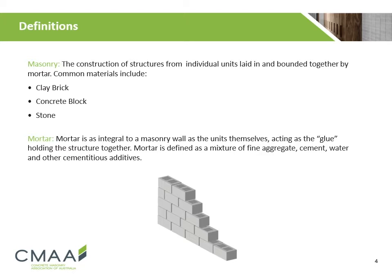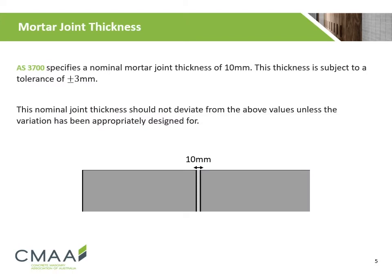Mortar is defined as a mixture of fine aggregate, cement, water and other cementitious additives. AS3700 specifies a nominal mortar joint thickness of 10mm, which is subject to a tolerance of 3mm. This nominal joint thickness should not deviate from the above values unless the variation has been appropriately designed for.